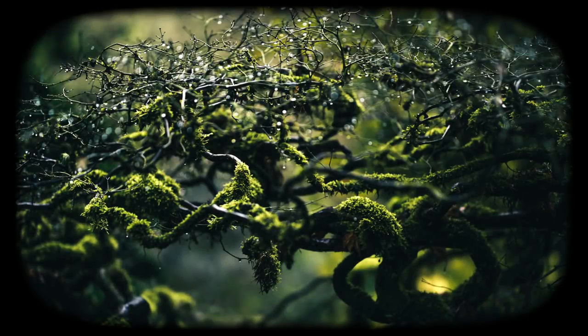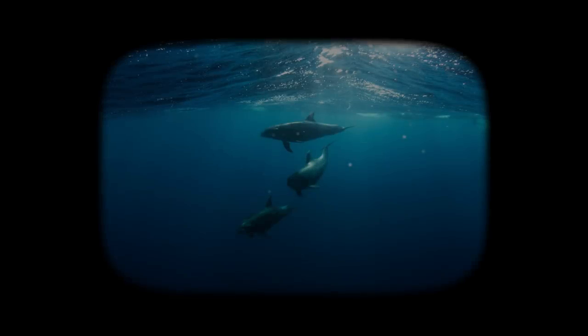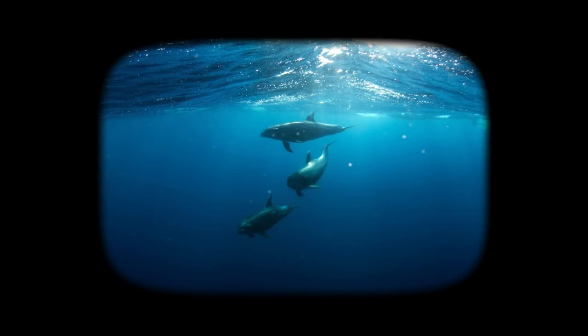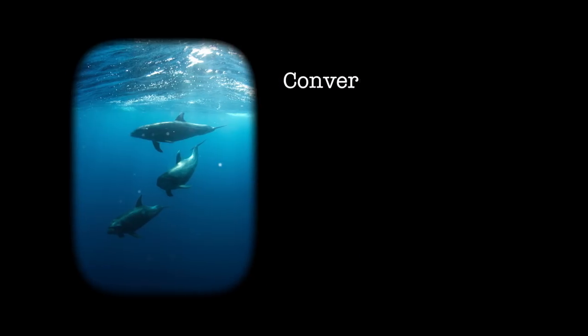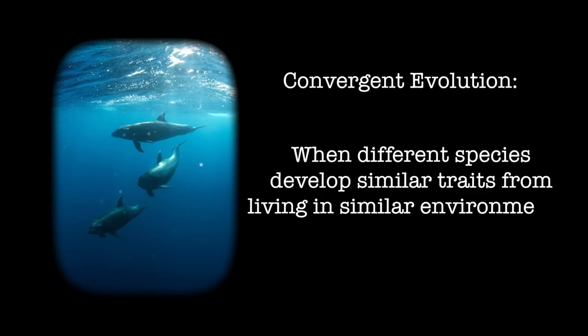So we know that if one delved deep enough into the past, they would find that all life is related. However, species that have been separated for millions of years of genetic isolation often develop similar phenotypic characteristics due to their similar environments. And this brings us to convergent evolution, the process by which different species that are not monophyletic develop similar traits due to inhabiting similar environments.